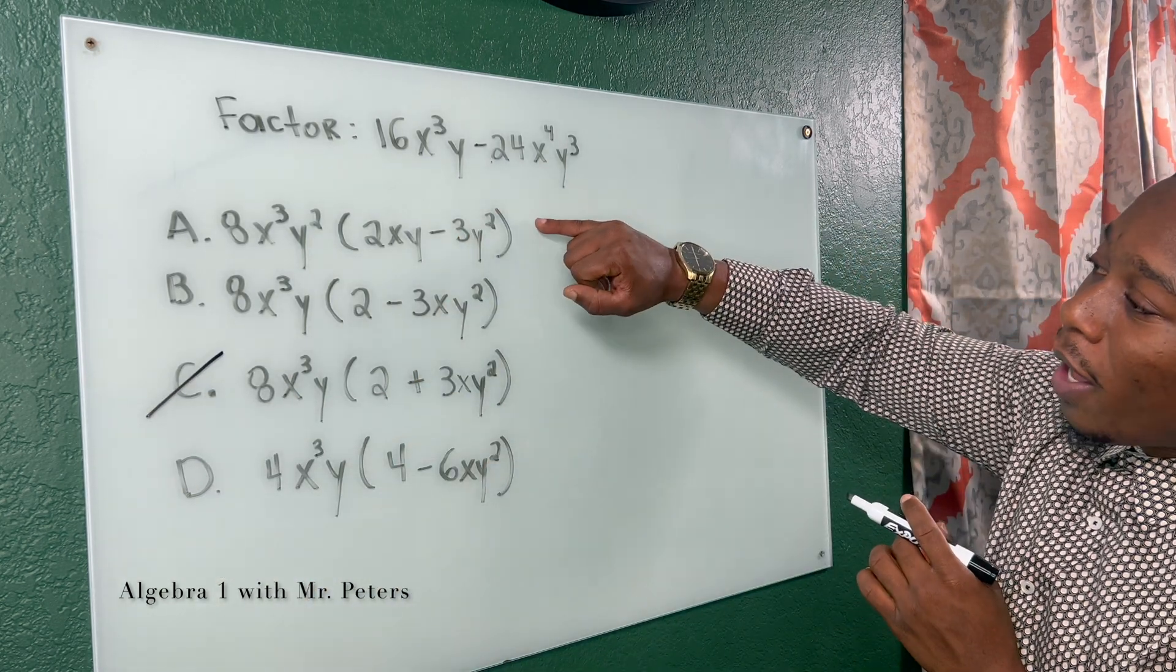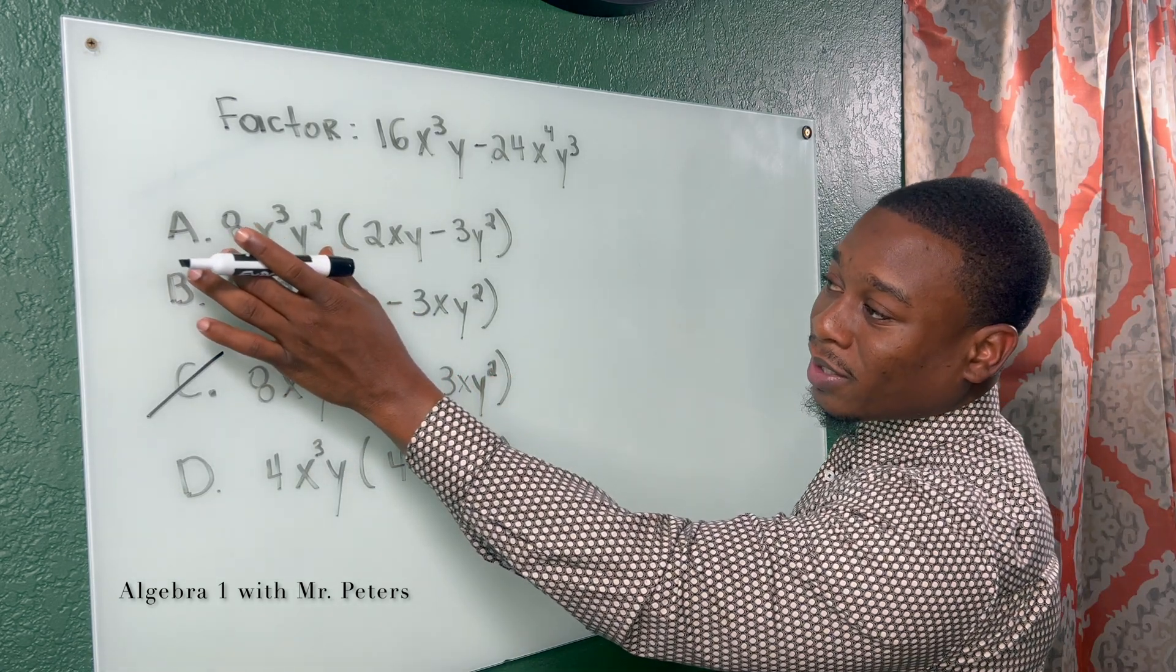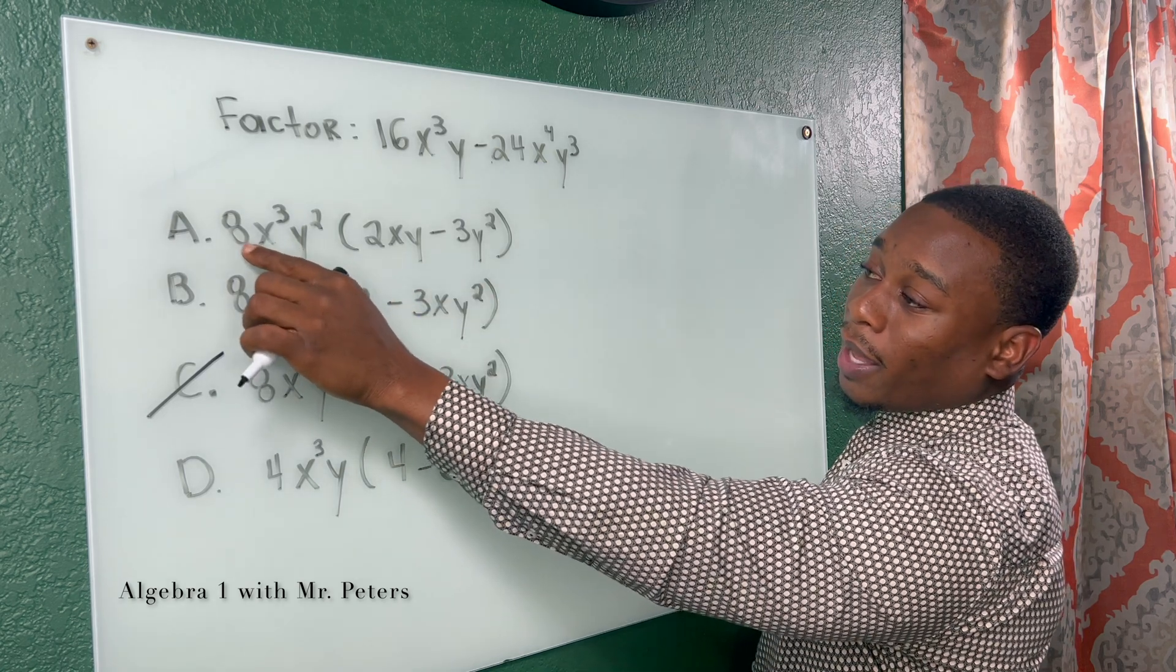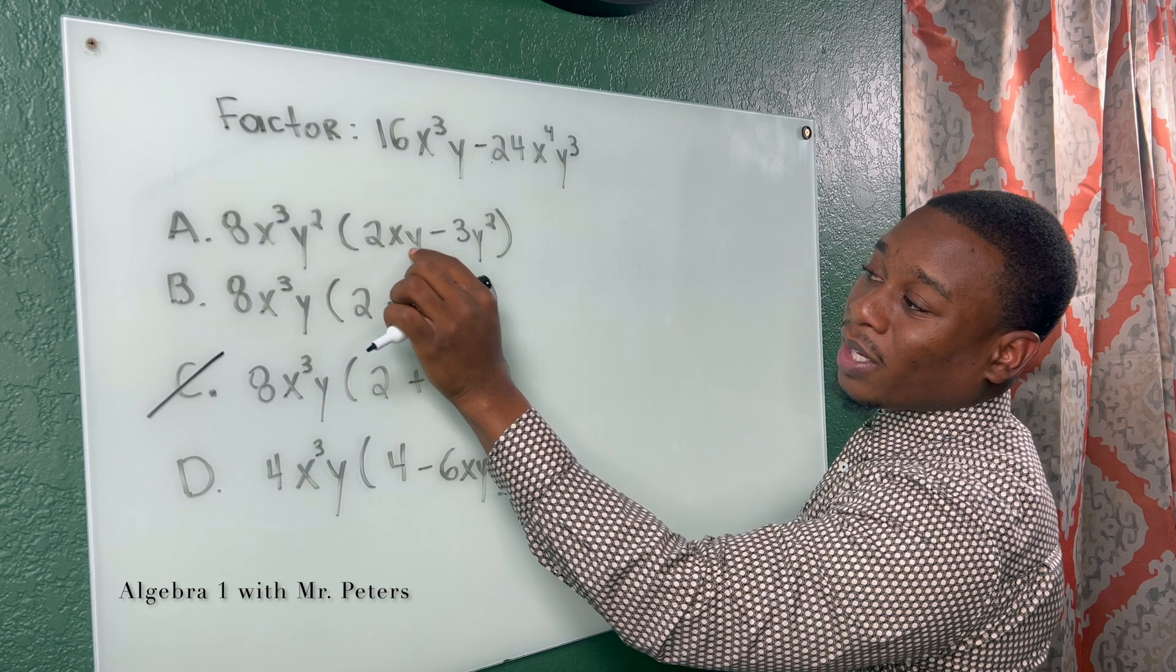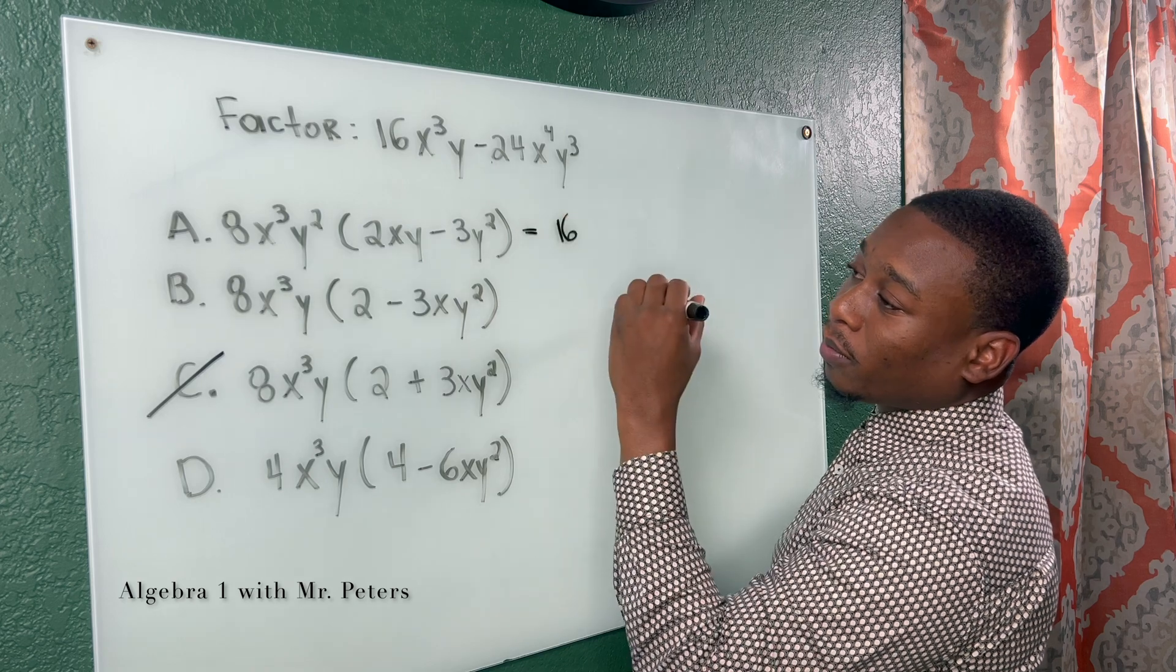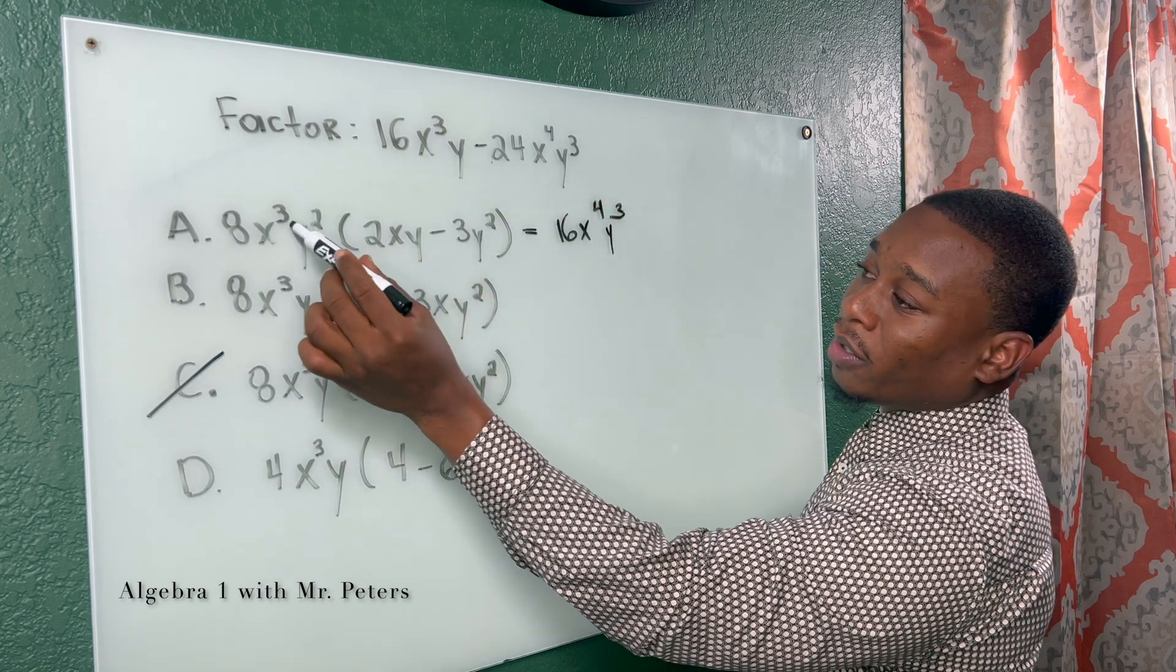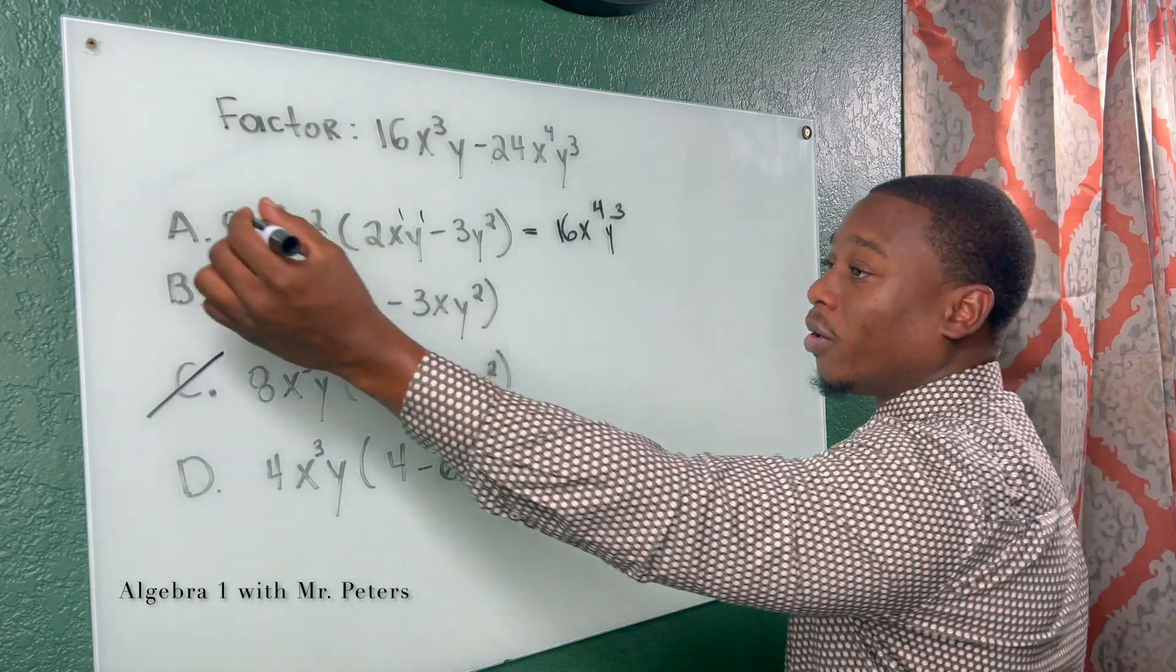Now let's say I go up to A. Remember, when we multiply this outside term with what's inside the parentheses, we're supposed to get this as an answer. When I look at 8x³y², when I multiply this back with 2xy, what this is going to give me is 16x⁴y³. Do you see this? There's a one here, one here. So that's automatically wrong.